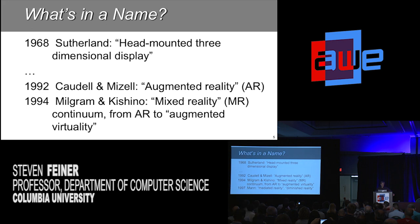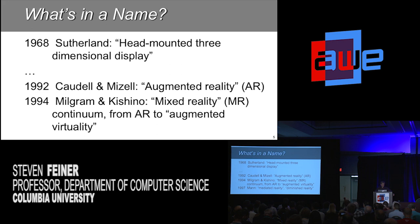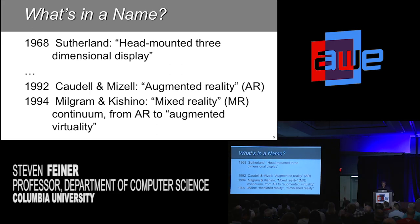It turns out there are lots and lots of names for these things. This is the classic thing that happens in a world of research that then turns into a world of marketing. In 1968, as Ori alluded to this morning, was the first published paper on VR and AR by Ivan Sutherland, who referred to what he was doing with a rather prosaic name: head-mounted three-dimensional display. Then 24 years passed before Tom Caudell and Dave Mizell, then at Boeing, coined the term augmented reality — often abbreviated AR — to refer to the idea of mixing together virtual things with real things.